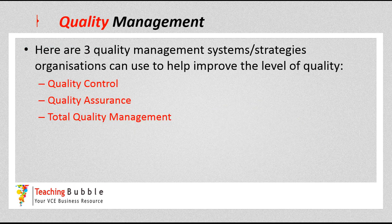There are many different ways an organization can look to improve their quality, but there are three main ones we're going to look at in this video and throughout this course. If you learn others, that's absolutely fine — different textbooks use a variety of them — but all of them have these three: quality control, quality assurance, and total quality management. We'll go into each one individually.